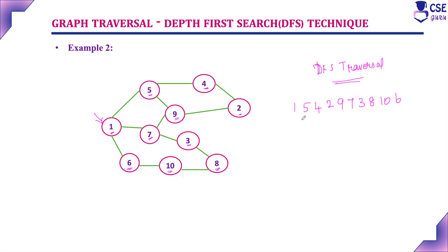So we have visited all the vertices in the given graph using depth first search traversal technique, and this is the DFS traversal output. DFS will search and visit the vertices deeper and deeper into the graph. The data structure we use in depth first search is the stack data structure. Now we will discuss how to implement DFS traversal step by step using a stack.